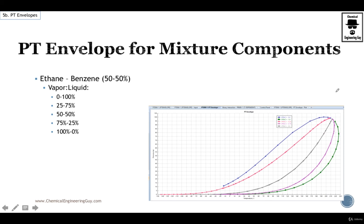We can add more lines. Let's say we want the 0%, 25%, 50%, 75%, and 100% vapor lines. They're present here, going from here to here: 0% vapor, 25% vapor, 50% vapor, 75% vapor, and 100% vapor.